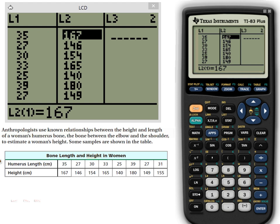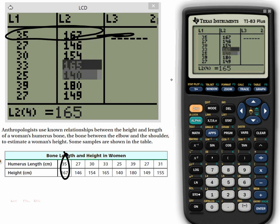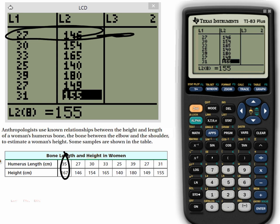Okay, so I've entered all of my data, and basically once I finished entering list one, I just went over and back at the top, and I entered all the corresponding values in list two. So you now can see that when I look, for example, I've got this point right here, 35, 167. It is listed in my very first column right here. And then I've got the 27, 146, the 30, 154, the 33, 165, the 25, 140, the 39, 180, the 27, 149. And the last one is the 31, 155. So you can see I've got all the data entered in my list.